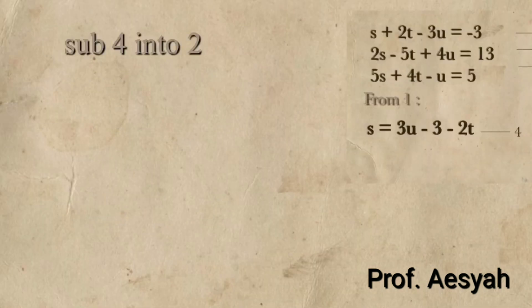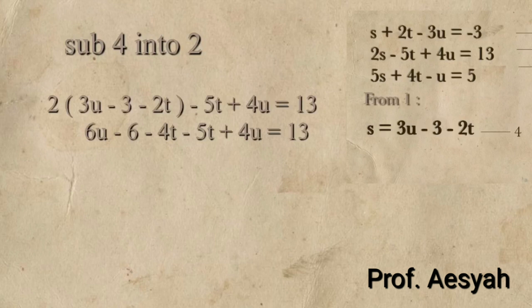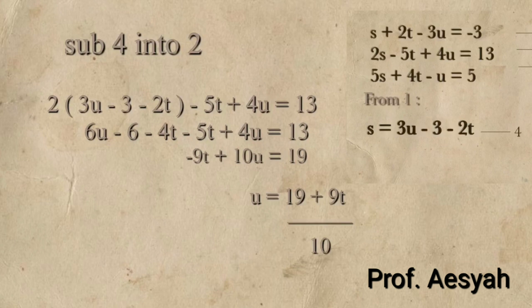So, the next step is to substitute equation 4 into any of the equations that haven't been touched yet. I substituted equation 4 into equation 2, and this got me u as 19 plus 90 over 10. After that's done, label that as equation 5.